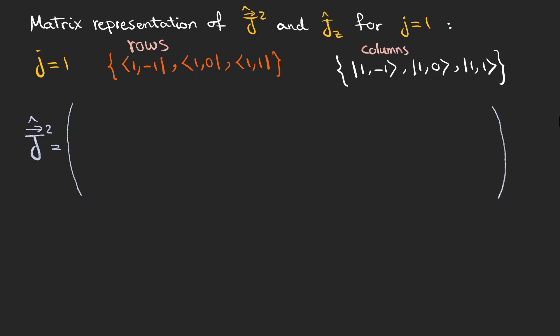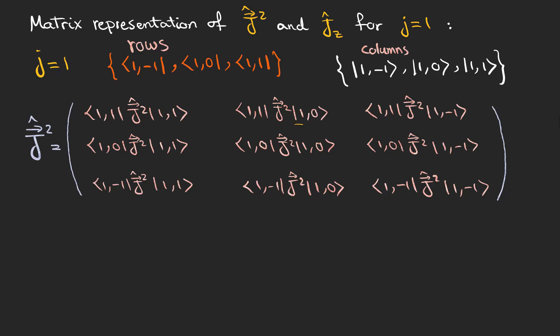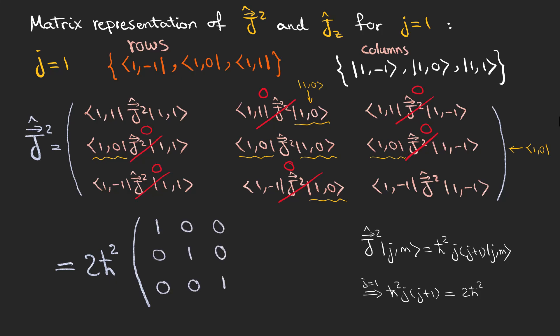These are the three elements of the first row, which all have the bra |1,1⟩ on the left. The second row is denoted by |1,0⟩ bras and the last row has |1,−1⟩ on the left. All the elements which are not on the diagonal are zero because the angular momentum squared operator doesn't change the kets. For the three diagonal elements, we can see that for j equals 1, the eigenvalues are 2h-bar squared. So this is the matrix representation of J squared.